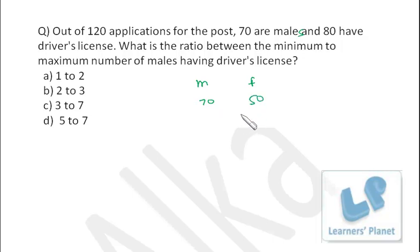Now 80 have driver's license. If we have to find out the minimum and maximum number of males - minimum males are having the driver's license, that means all the females are having the driver's license. So all females are having the driver's license, then 50 will be consumed, so we are left with 30. So at least 30 males will be having the driver's license.